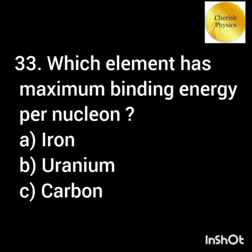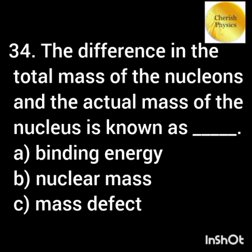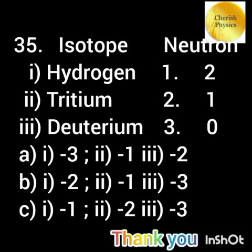Which element has maximum binding energy per nucleon? Iron (Fe-56) has the maximum binding energy per nucleon. The difference in the total mass of the nucleons and the actual mass of the nucleus is known as mass defect. Match the number of neutrons to their corresponding isotope.